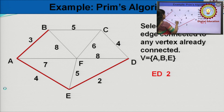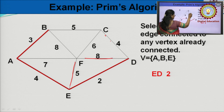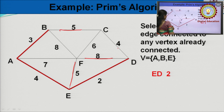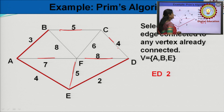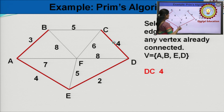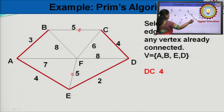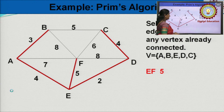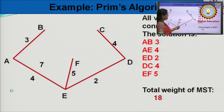Now select the edge connected to vertices B, A, E, and D. The connected edges have weights 5, 8, 4, 5, and 7 — the least weight is 4. Select DC. Now choose the connected edge from vertices A, B, E, D, and C. The least cost is 5 for two options, but we cannot take edge BC because it would form a cycle. So select edge EF. Now all the vertices of the graph are covered with minimum number of edges. This is the minimum spanning tree of the given graph and the cost of the spanning tree is 18.